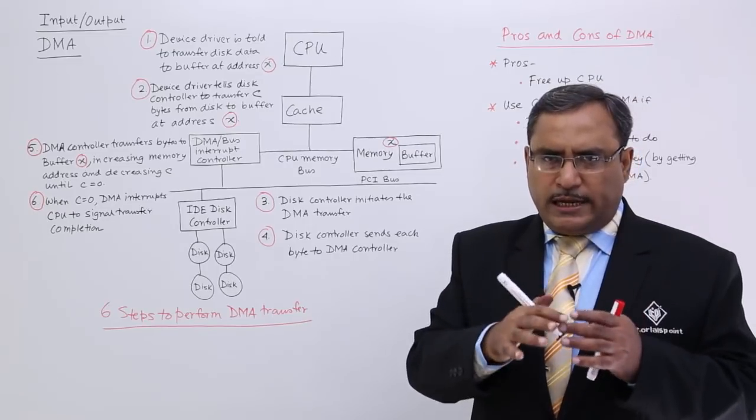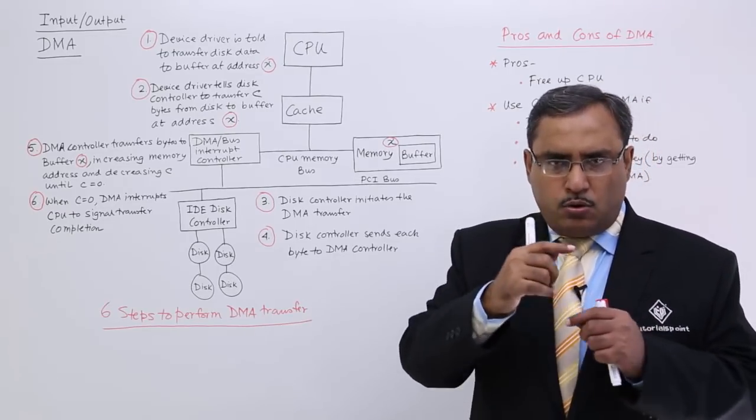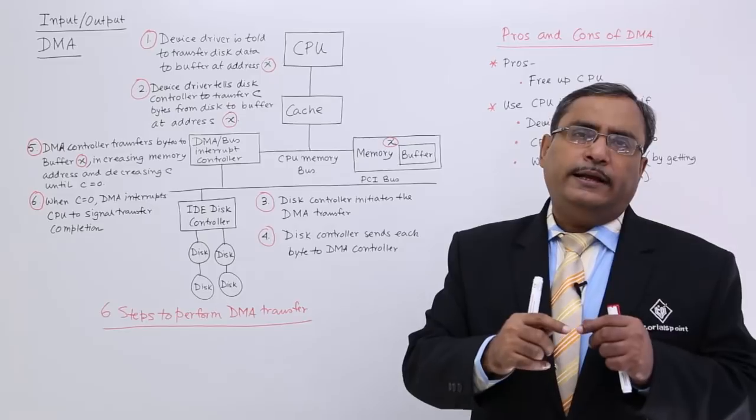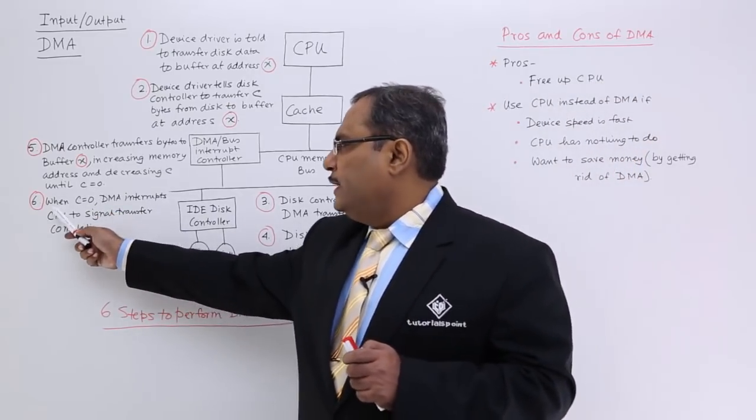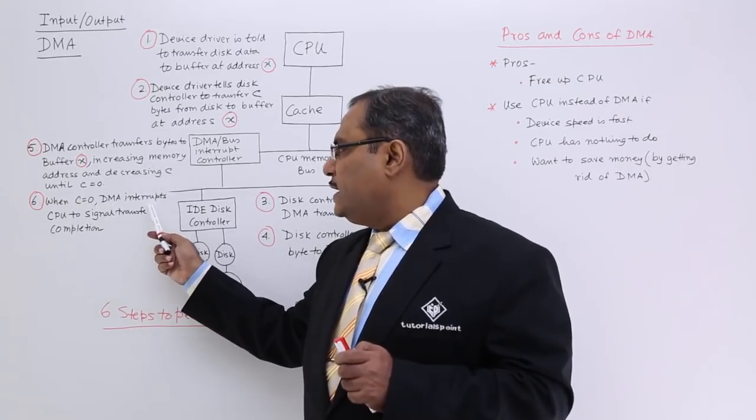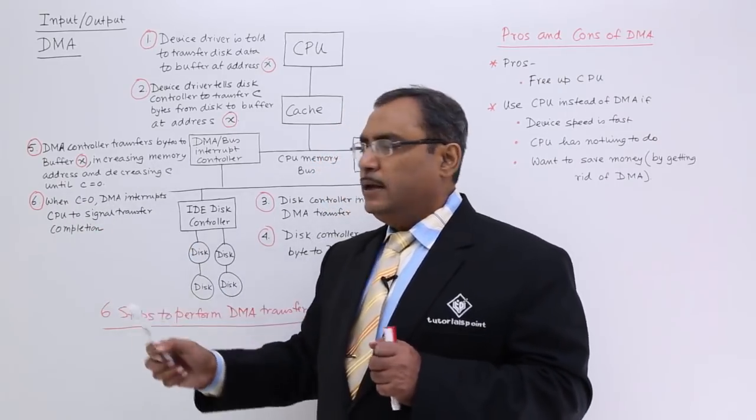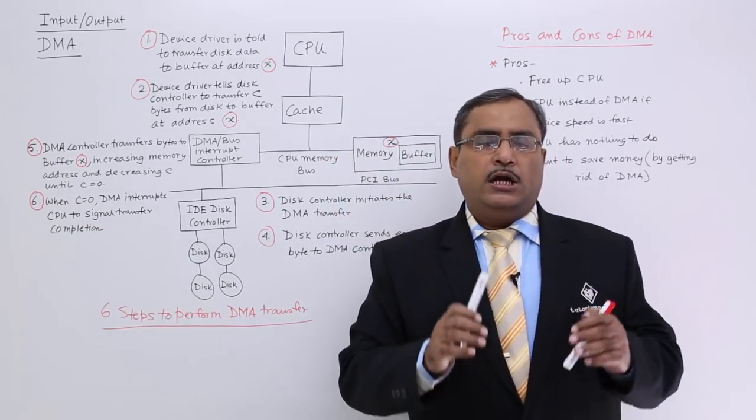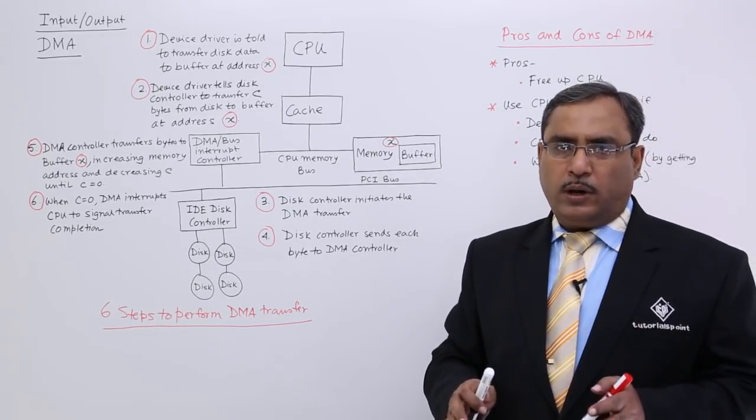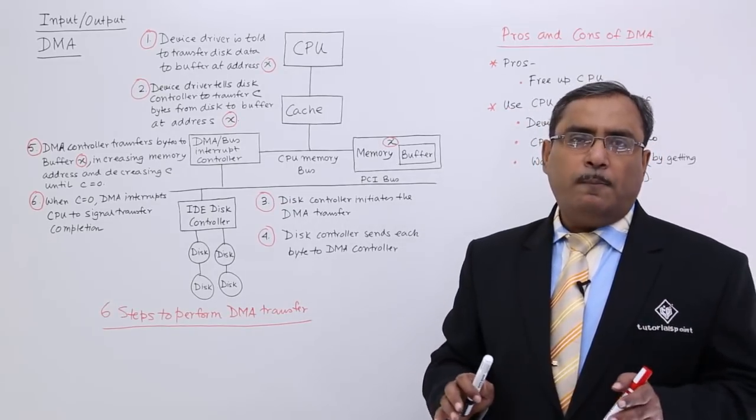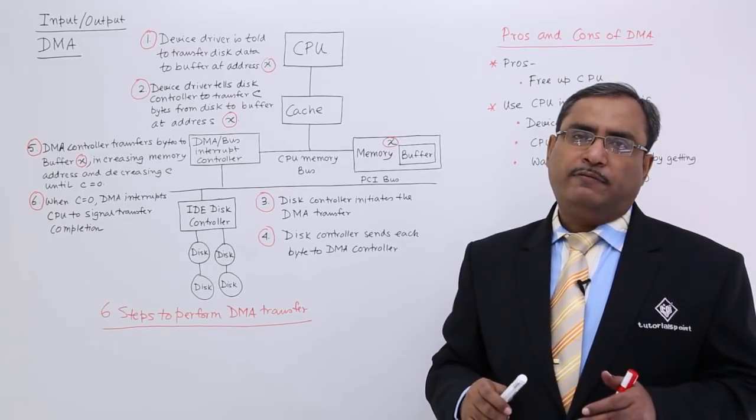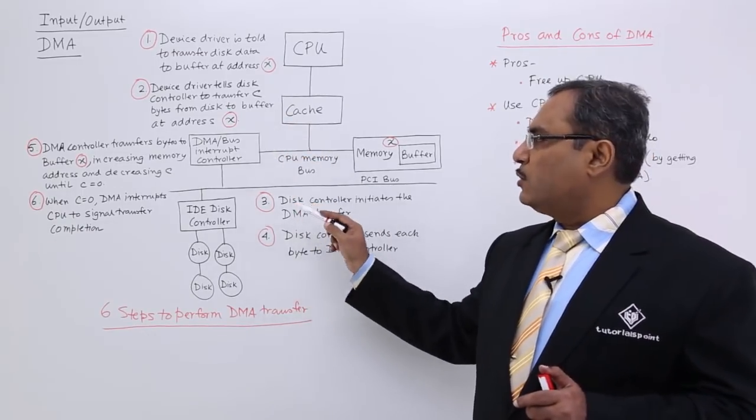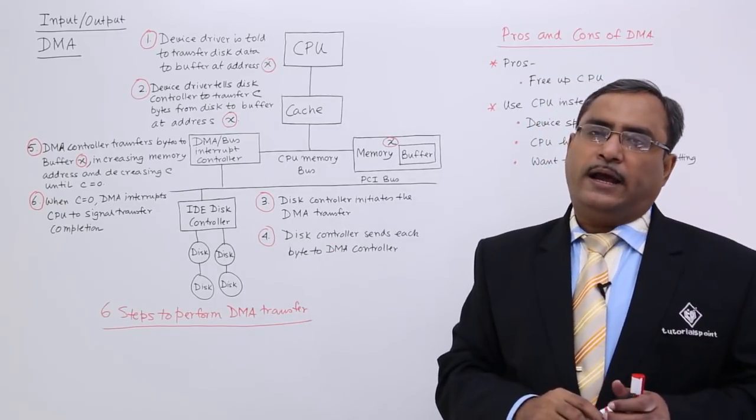Initially it will get initialized with the max count and it will now go on decreasing until it gets a value 0, until c is equal to 0. When c is equal to 0, DMA interrupts CPU to signal that the transfer of the required data, whatever the responsibility was assigned on it, has got completed. Now CPU can easily get the data in the memory buffer. In this way the DMA controller is doing the data transfer accordingly.